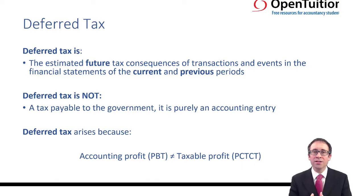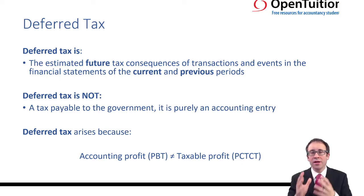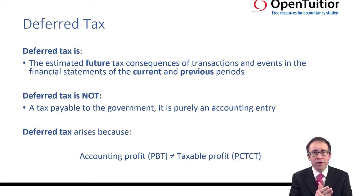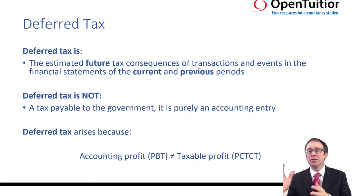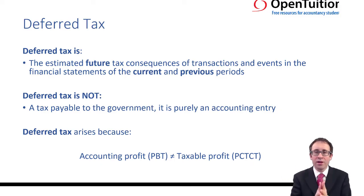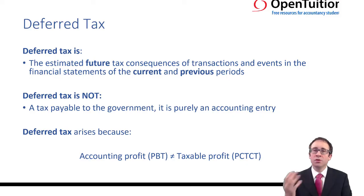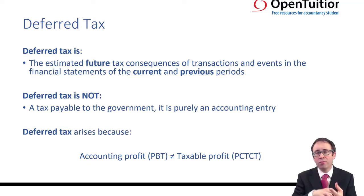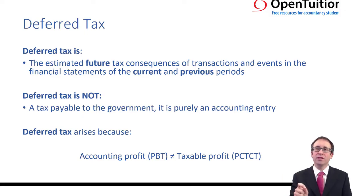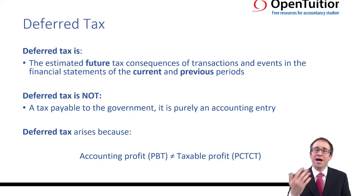The main reason deferred tax arises is because accounting profits before tax are not equal to profits chargeable to corporation tax. You might have an expense that goes through your accounting profits but is not taxable until some point in the future. Similarly, you might have income going through your accounting profits that doesn't go through PCTCT and will be taxed at some point in the future. If we've got an item going through profits, we would expect to see the tax impact within our financial statements in the same year based on the matching concept — but because the tax rules differ from accounting rules, deferred tax may arise.